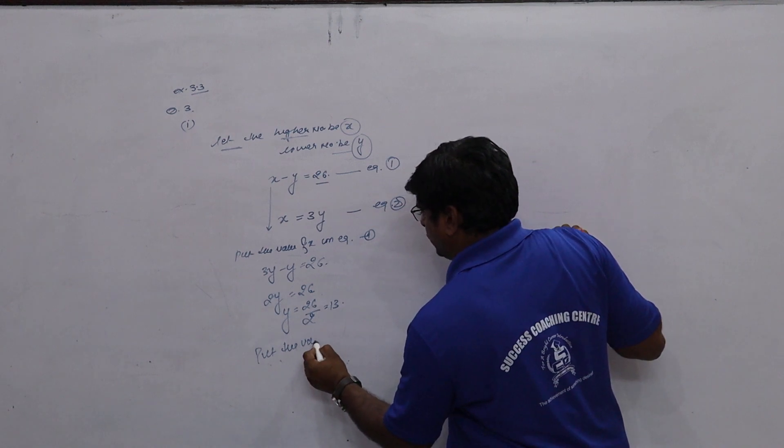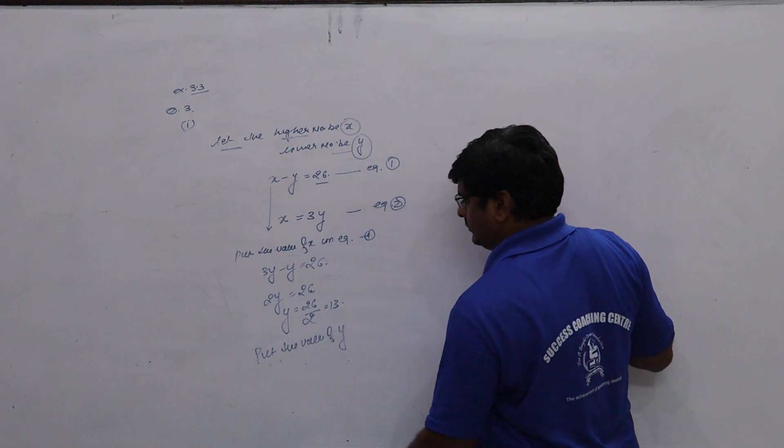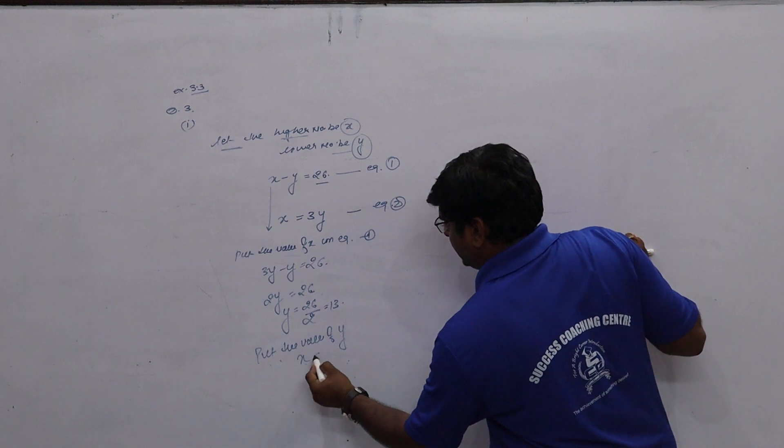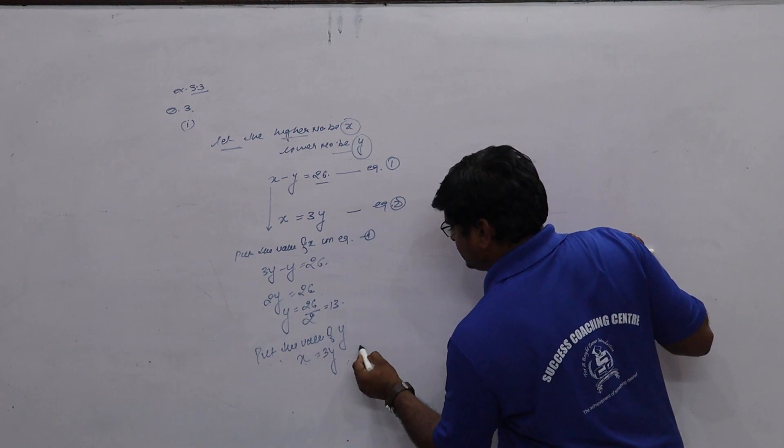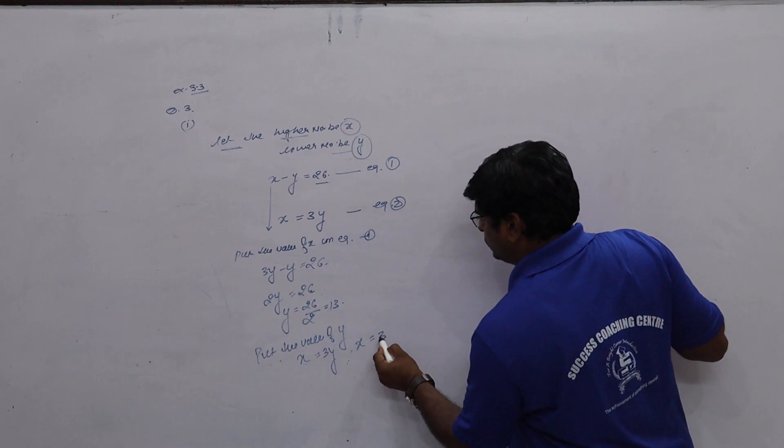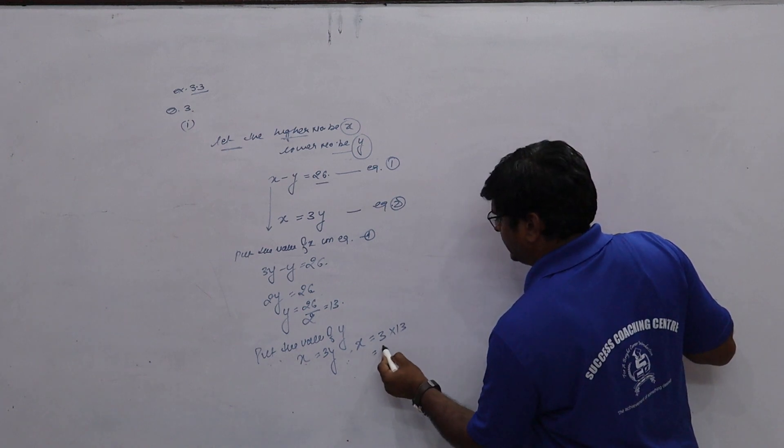Put the value of y. x equal to 3y. That means x equal to 3 into 13. That is 39.